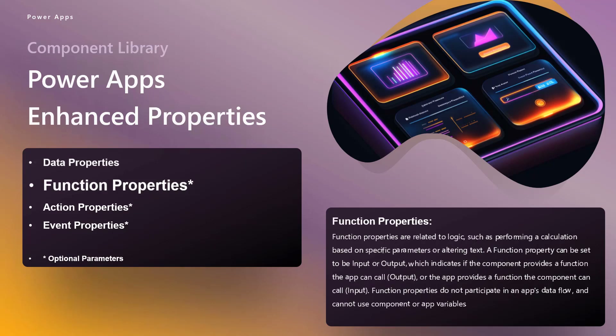Next up is function properties. These are simply related to logic — they work more like programmatic functions and you pass in parameters. This is the first one where we can see the use of optional parameters. These can be input or output, meaning that functions can be executed within the app and called within the component, or the function can be executed within the component but called from the app. However, you can't use any behavior like accessing variables, resets, or selects. You're just using basic functionality that gets returned to whatever is calling the function.